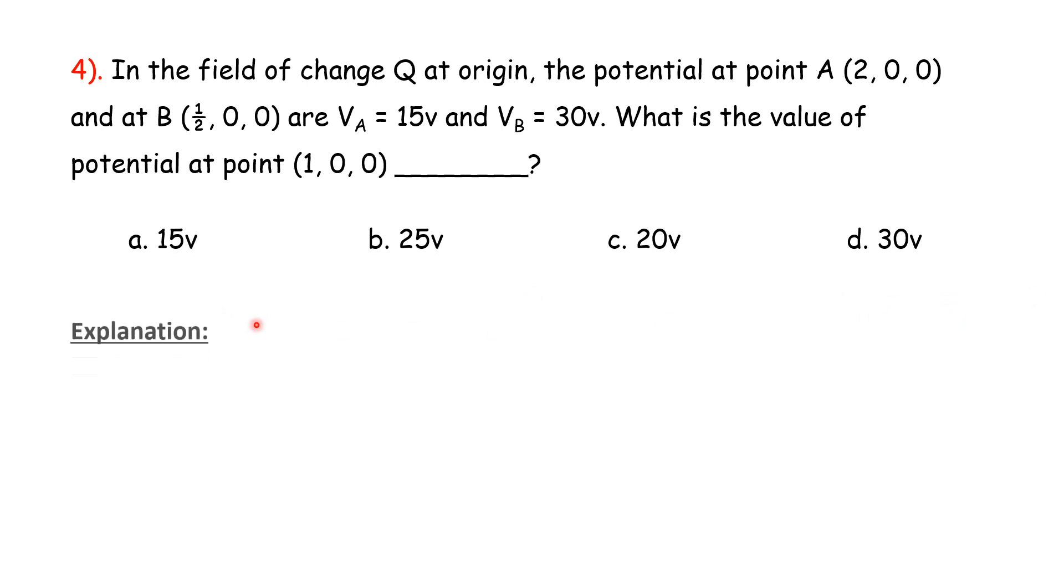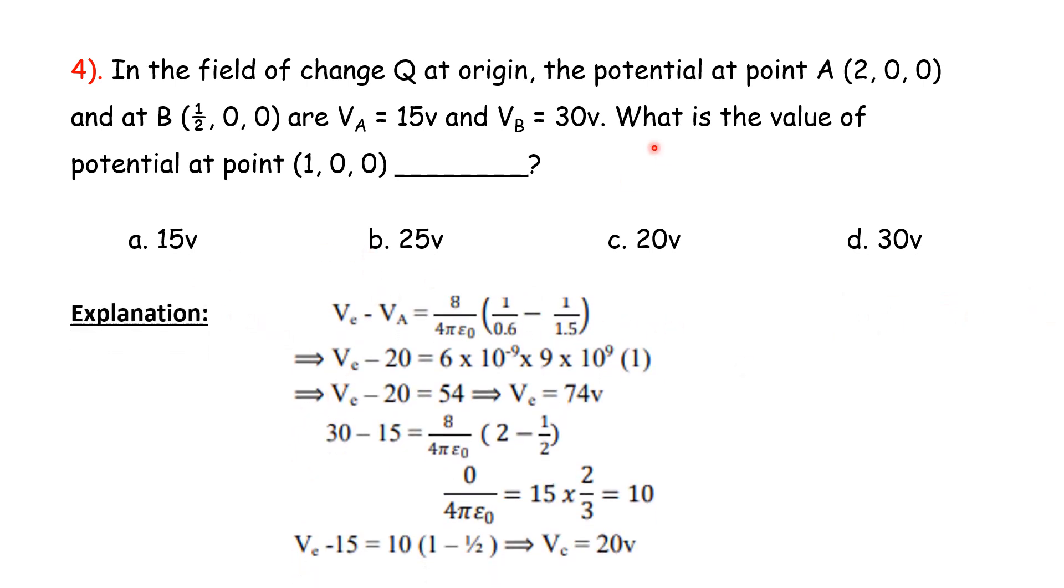Here the voltages given, we will have to make the development of the values. VA minus VB equals 20. VB minus 20 equals 6 into 10 to minus 9 into 9 into 10 to 9. That's why VB equals 20. This multiply is 54, then V equals 74V. 20 plus 54 is 74V. But 30 minus 15 equals, VC minus VA, V is 74V, VA is 15V.